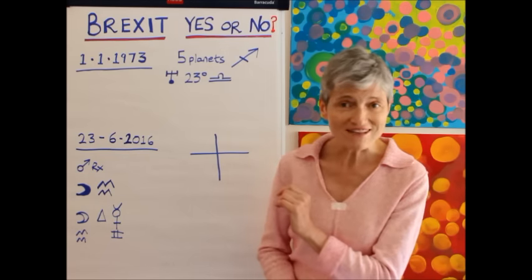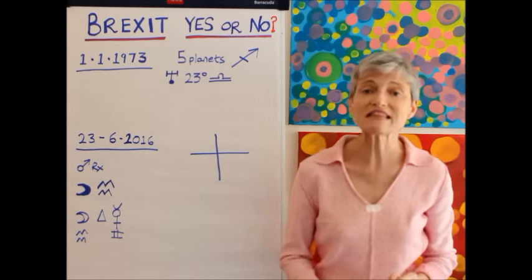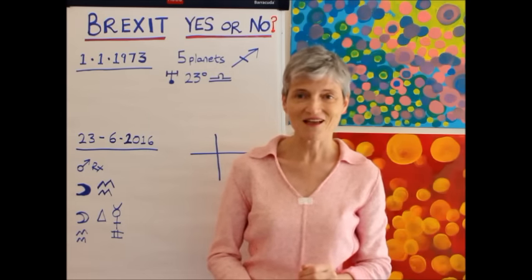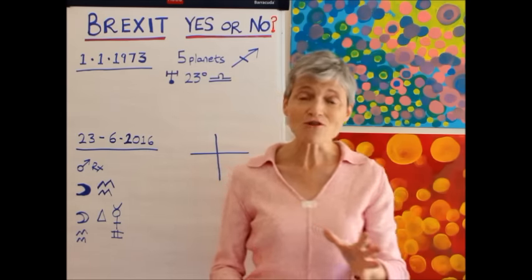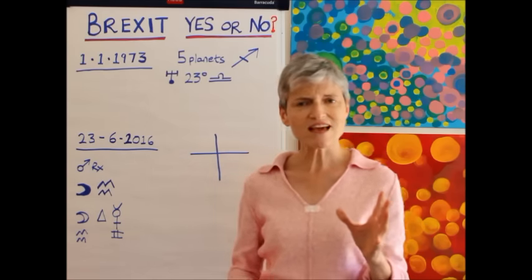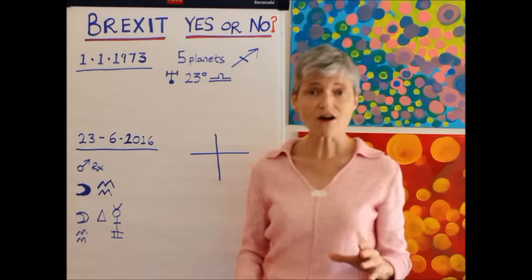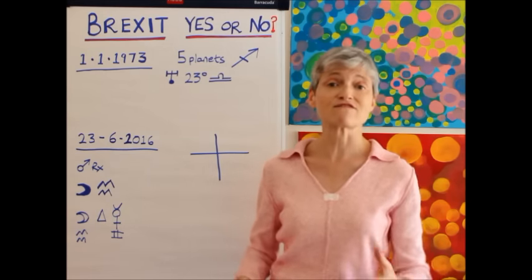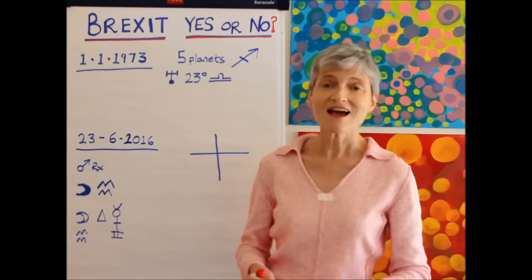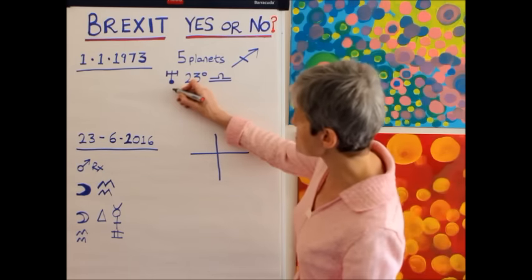Also on that date, Uranus was at 23 degrees of Libra. Now some of you may know, if you already do astrology or learn astrology, that somewhere between the ages of 42 and 44 you very often go through what is known as a midlife crisis. And this comes at the time when Uranus is opposite Uranus.